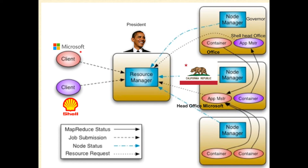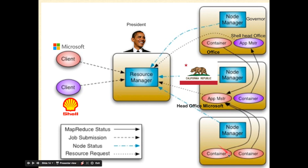Microsoft wants to get their offices set up, so they contact the president. The president talks to the governors of the states, and then the head office is established in one of the states. Afterwards, to get more offices established in various states, the head office would request the president, and the president would discuss with the governors, and accordingly, offices would be established in various states.